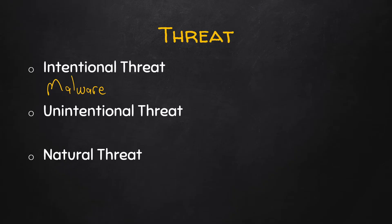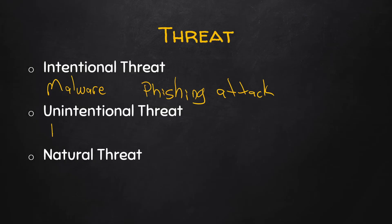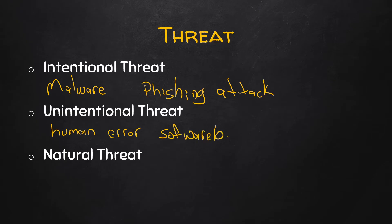An intentional threat could also be a phishing attack. An unintentional threat could be something like human error — this could be something like a software bug or a misconfigured device.